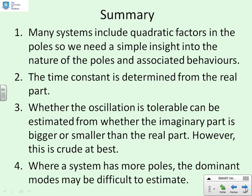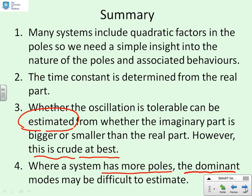In summary, then, many systems include quadratic factors in the poles. And what we want is a simple insight into the nature of the poles and the associated behaviours. The time constant can be determined from the real part. And that's relatively straightforward. We get the real part. We work out the time constant. Roughly four times the time constant gives us the settling time for the associated mode. Now, whether the oscillation is tolerable can be estimated. And we must emphasize that it's estimated. It's not exact from whether the imaginary part is bigger or smaller than the real part. But this is a fairly crude estimate. It's not going to be exact by any means. However, where a system has lots more poles, it's not always clear what the dominant modes will be. And so you could have a quadratic factor with what appear to be relatively nasty modes. But if those modes are not dominant, they may not be observed in the output at all, because they may be insignificant.